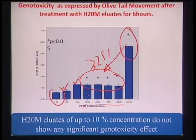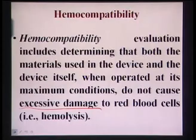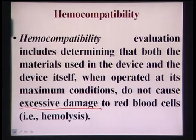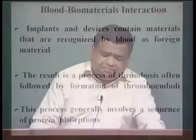Most blood-contacting devices or materials will cause some damage to RBCs. However, your task is to determine whether this damage is statistically significant compared to control samples. You cannot have an ideal material that causes no damage to RBCs - that is the bottom line. Therefore, a blood-contacting device will have some genotoxic effect, but this should not be statistically significantly higher than what a control specimen does.